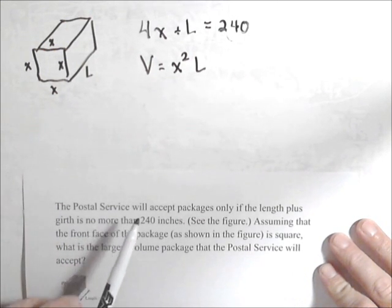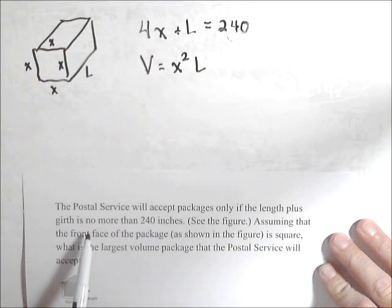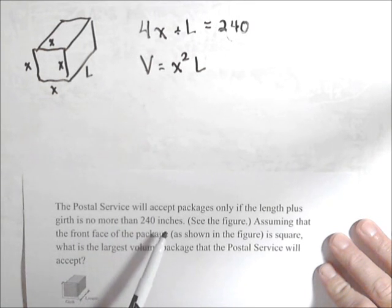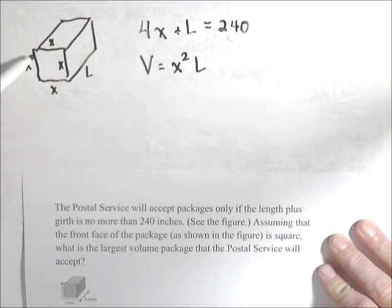So the Postal Service will accept packages only if the length plus the girth is no more than 240 inches. The girth is the distance around the end plus the length. Now, assuming the front face of the package is square, what is the largest volume they'll accept?